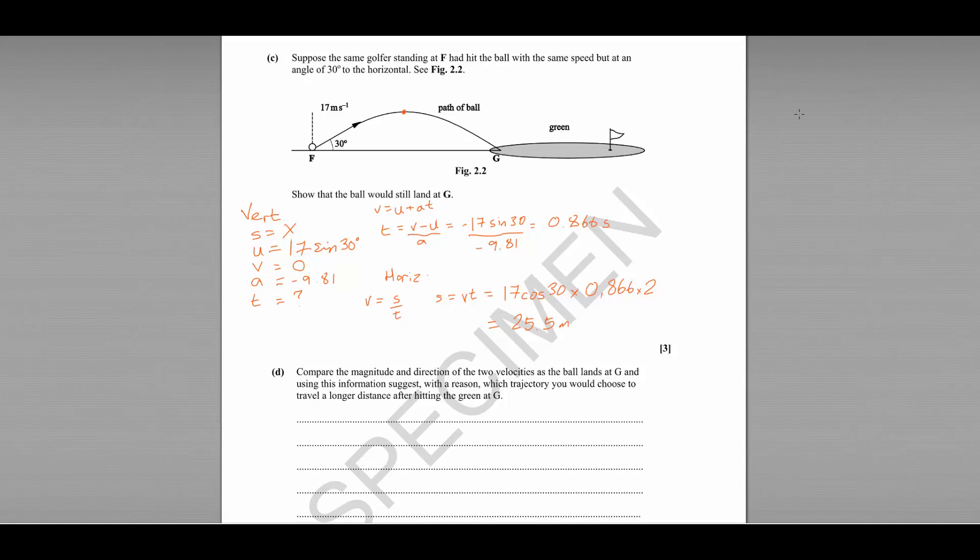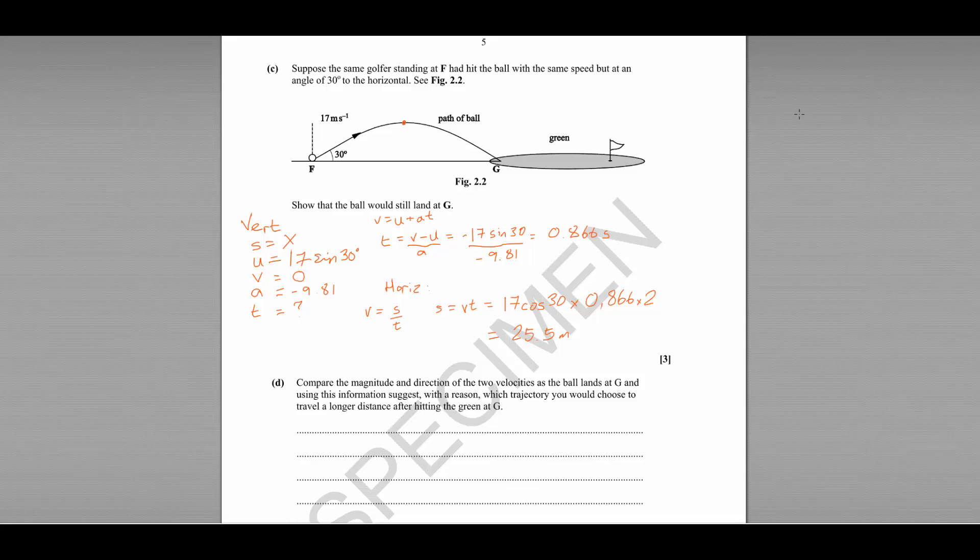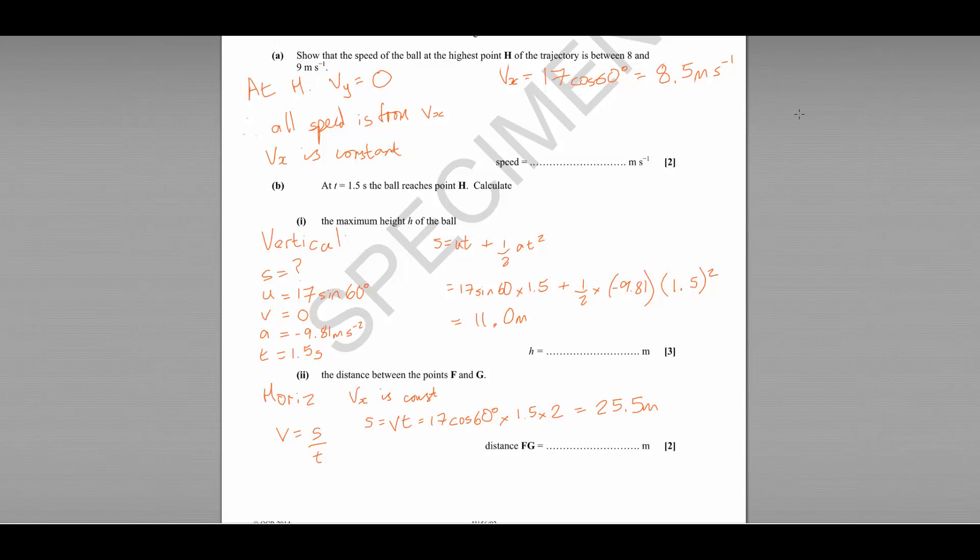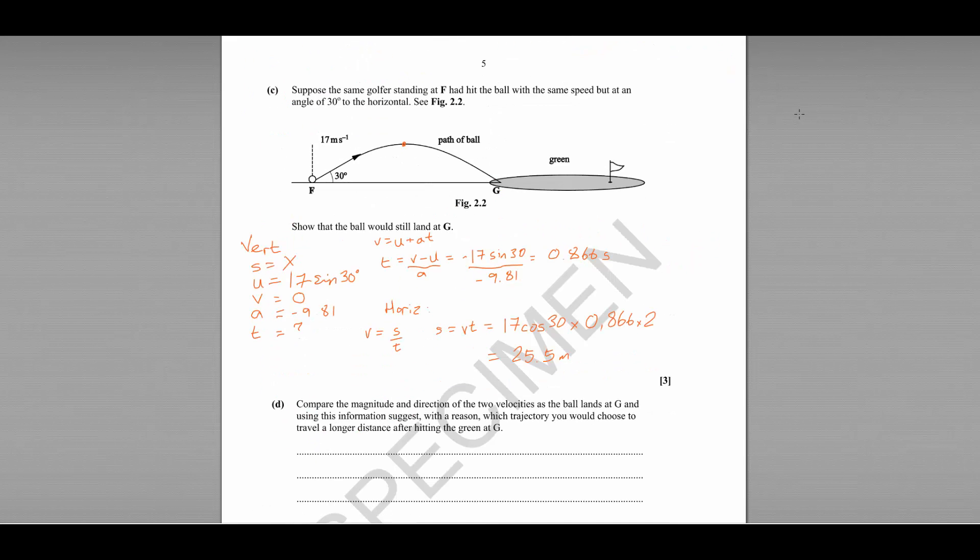Now the question was show that the ball would still land at G. Well, 25.5 metres is the same as the distance we've just worked out has been between F and G. So that's consistent, which means we could well be correct there.